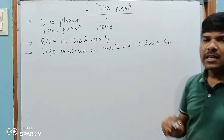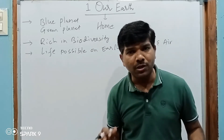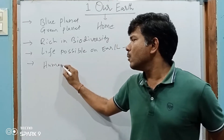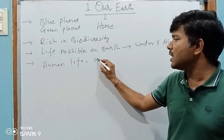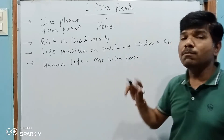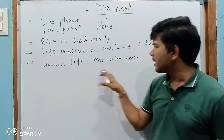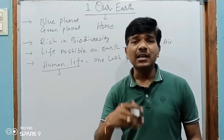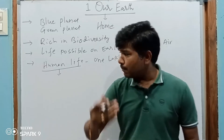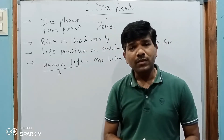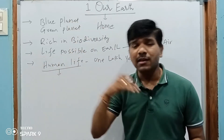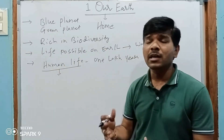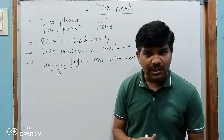Life is possible on earth because of water and air. If there is no water, there is no air, there is no possibility of life on the planet. The human life evolved on the earth about 1 lakh years ago. Before 1 lakh years ago, nothing was there on the planet. When human life evolved, humans started utilizing resources — taking vegetables, meat, honey, and water from the forest and rivers — benefiting from the biodiversity.